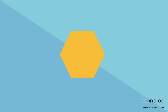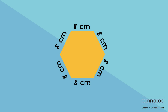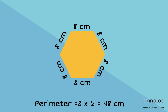How can we find the distance around a regular hexagon that has sides of length 8 cm? Well, a hexagon has 6 sides. Therefore, we have 8 cm 6 times. This gives us 8 multiplied by 6, which is 48 cm.